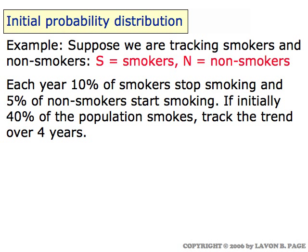Now another important concept is the concept of an initial probability distribution. This is something we haven't encountered yet in our discussion of Markov chains, but we'll introduce it in this example. Here we're looking at data on smokers and non-smokers, and the data says that each year ten percent of smokers stop smoking and five percent of non-smokers start smoking.